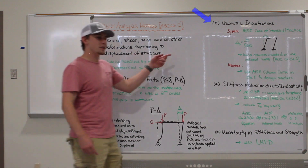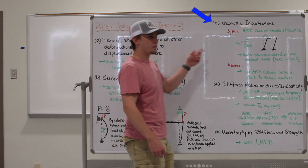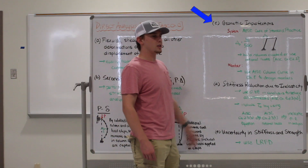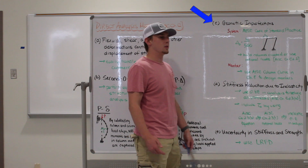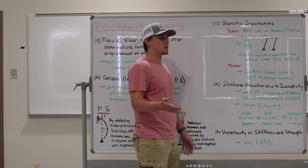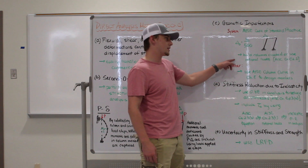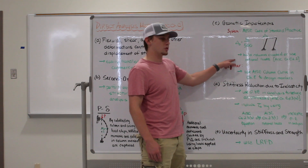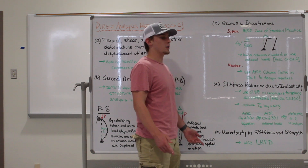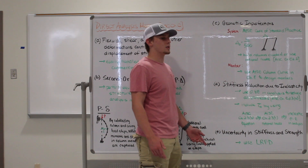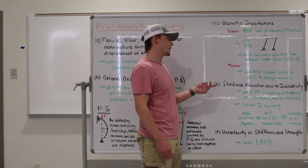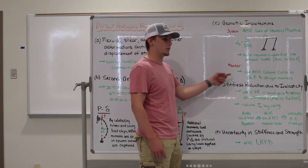Exactly! Item C requires us to account for imperfections. If you didn't want to give your initial column loads a slanted geometry, you could just model it perfectly straight and just add the notional loads per AISC chapter 2.2. The member imperfections will be included since we select member designs using the AISC column curve in chapter E. I get that, but I'm really stuck on items A and D.